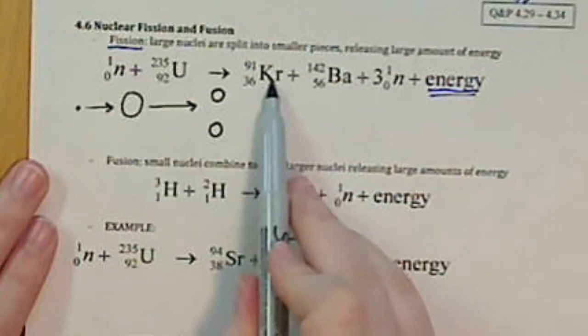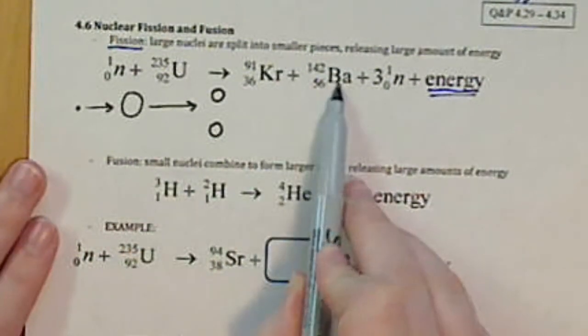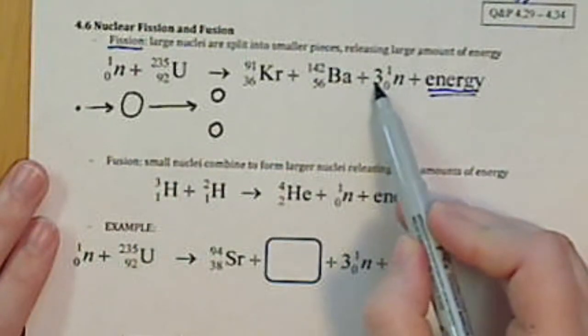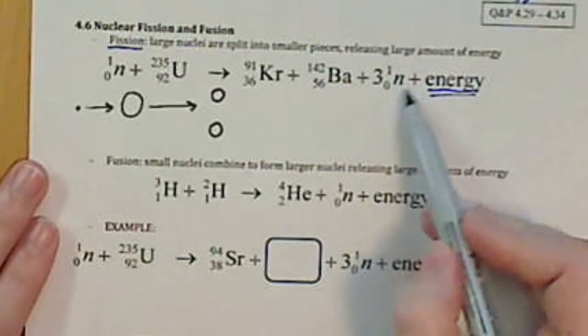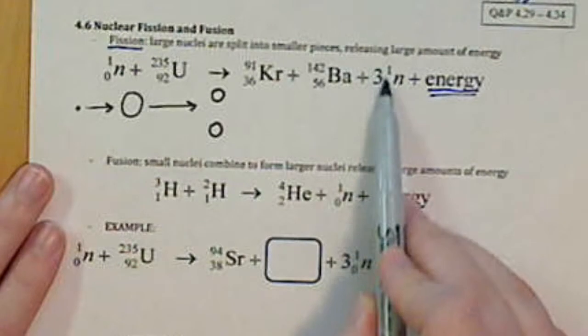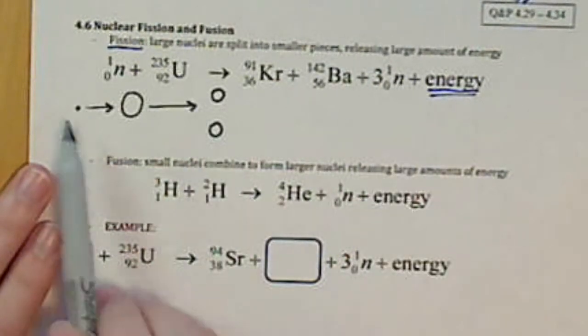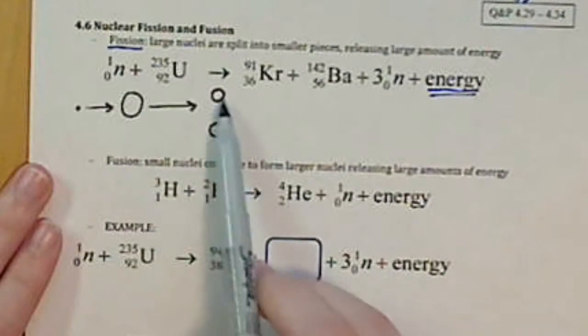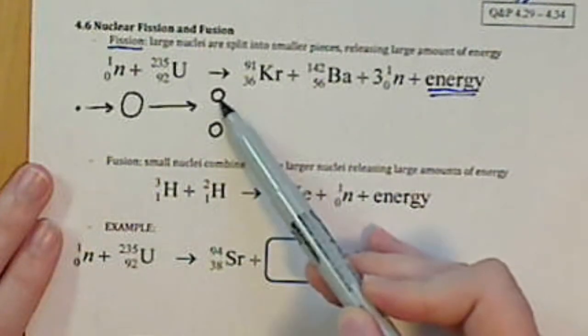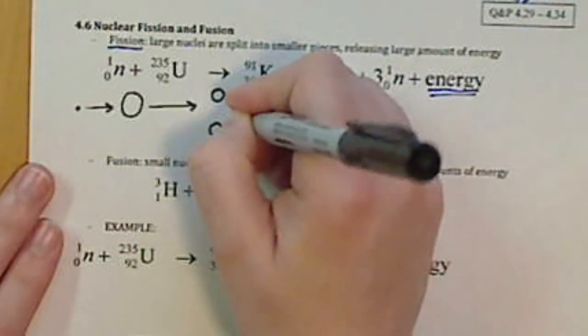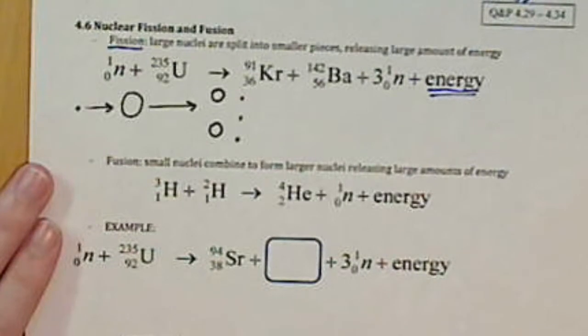In this case, we have krypton-91 and barium-142. It's also going to produce three more small particles. This is just a coefficient out in front of our symbol for the neutron. So when we fly one neutron into an atom of uranium, we get two new nuclei. These are our daughter nuclei. And we get three more neutrons.